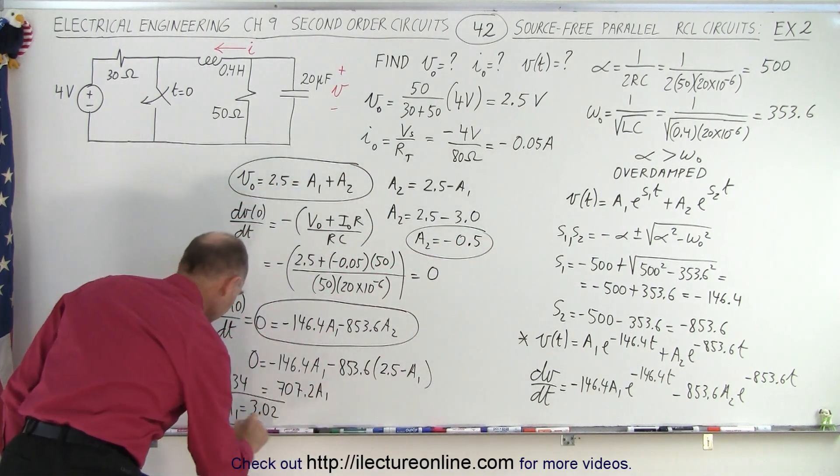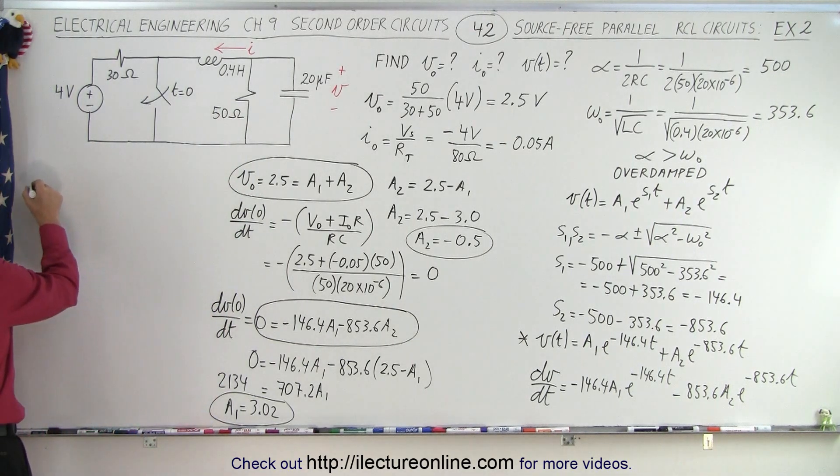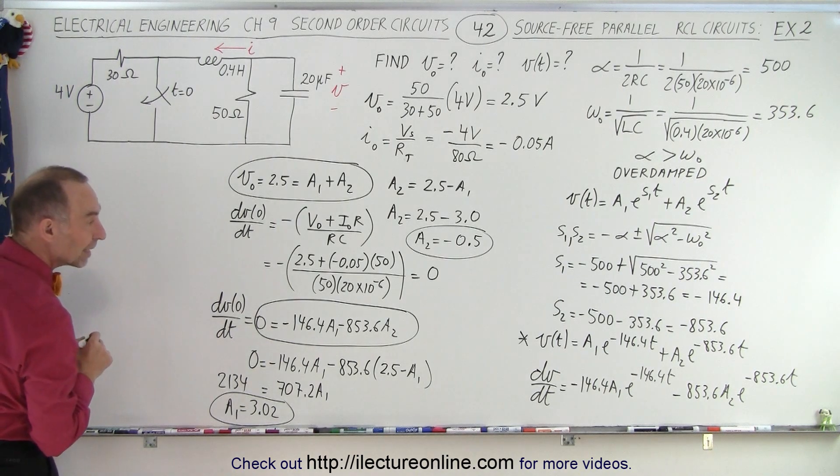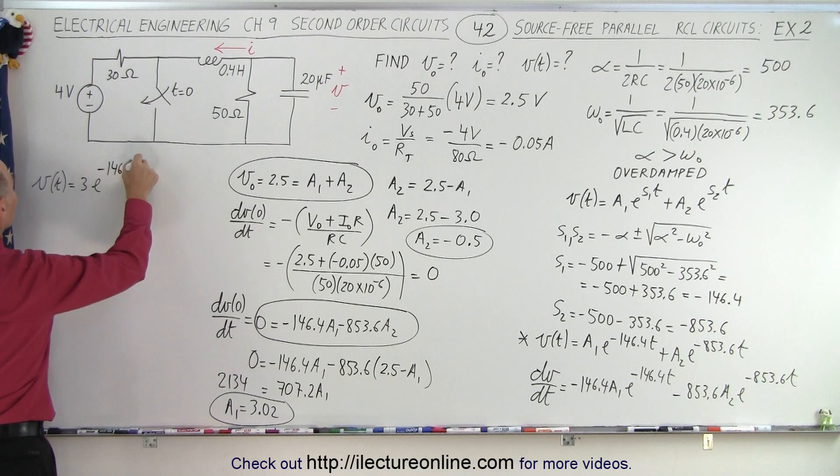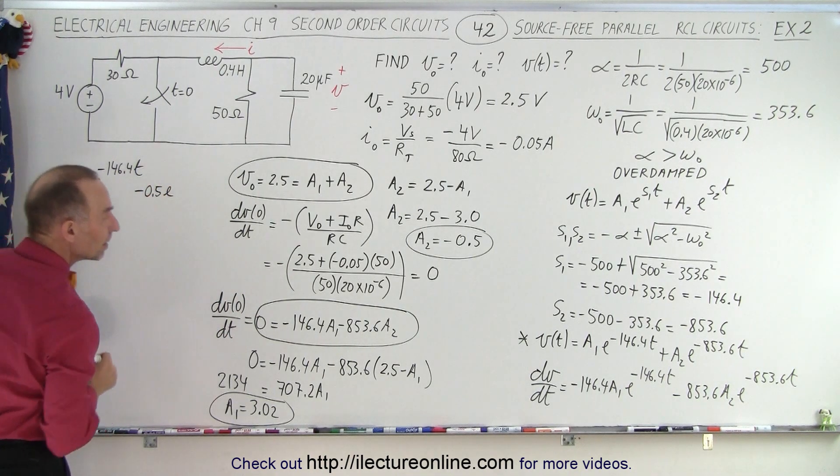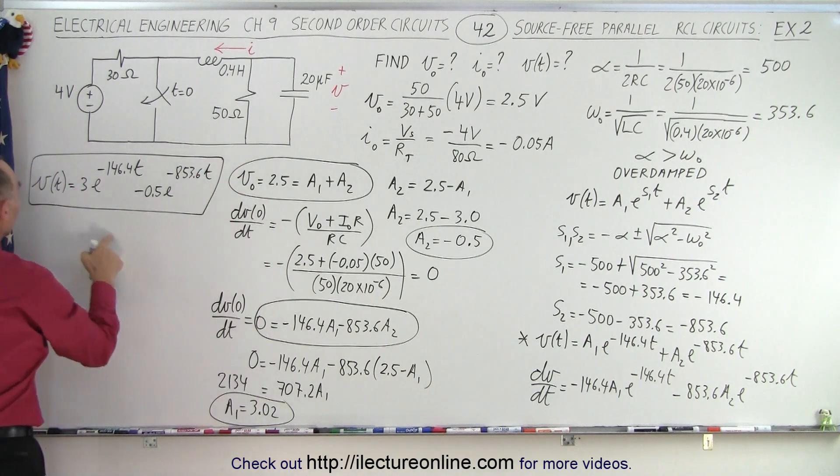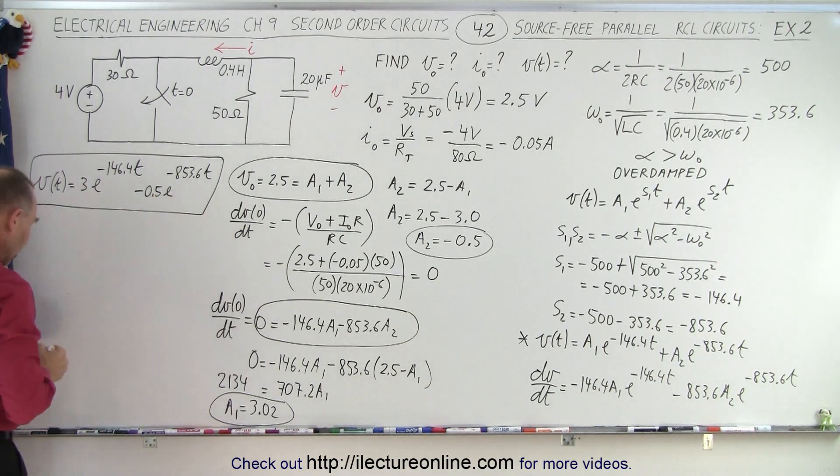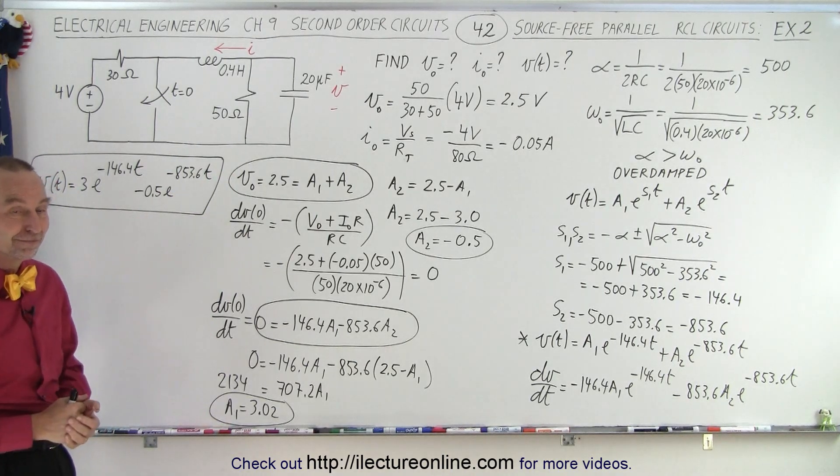So now we have A1 and we have A2, and I need some room somewhere, so we'll put it right there. So let me try to get out of the way here. So the voltage as a function of time is equal to A1, A1 was 3, times E to the minus 146.4T, and then we have plus A2, and A2 is minus 0.5, so minus 0.5 E to the minus 853.6T. And there we have the equation that gives us the voltage with respect to time. We have two constants, A1 and A2, and S1 and S2 for the exponential portion, and that is then the equation what we're looking for based upon these initial conditions. And that is how it's done.